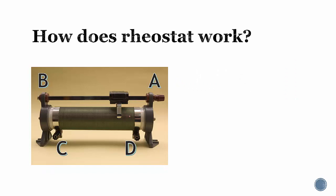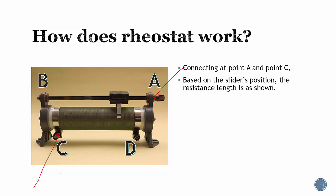How does the rheostat work? Taking the connection at point A and C, you connect two wires. Based on the slider's position, the resistance length is as shown. This is the relevant resistance wire. The wire is connected here, and you have the resistance wire. The current will flow through here and out through this wire.